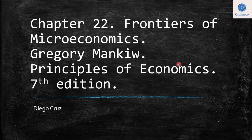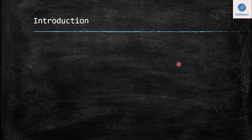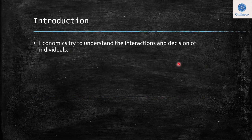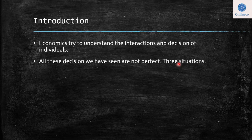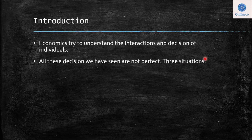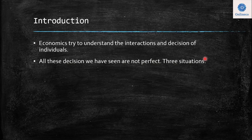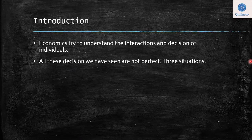Hi everyone. We are going to talk today about the frontiers of microeconomics. This is Chapter 22 of the book by Gregory Mankiw, Principles of Economics. Economics tries to understand the interactions and decisions of individuals. We have been making several assumptions throughout the chapters to arrive at different conclusions. However, we know that all these decisions are not perfect. So we are going to split this situation into three parts to better analyze the frontiers of microeconomics.